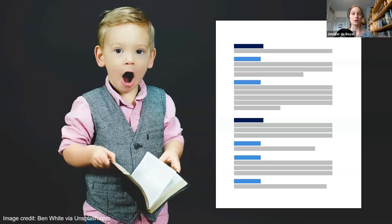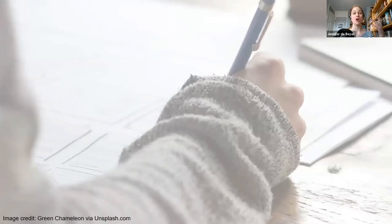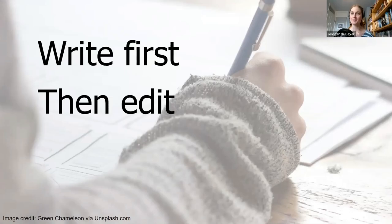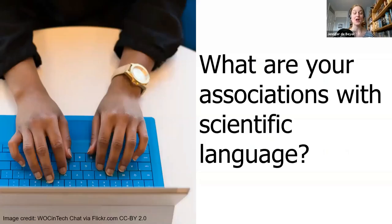One of our key points last week was that we separate generating new text from editing our text — doing those as two separate processes. We talked about writing first and then editing, so that we don't block the generation of new ideas. We're now coming into step eight of our process: polishing and revising existing text. That's what we're going to focus on today.